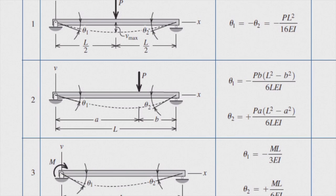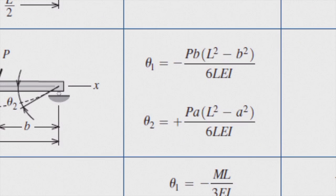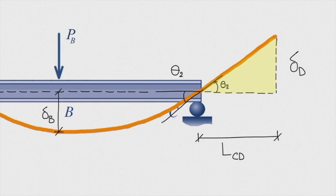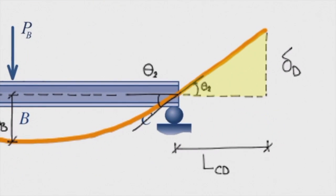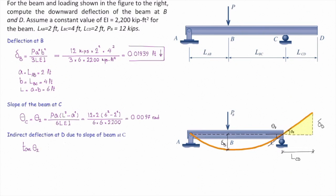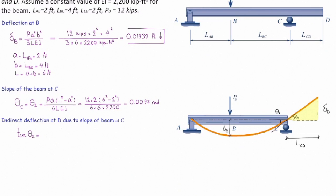From the table, the slope on the right part, theta_2, is given by: θ₂ = Pa(L² − a²) / (6LEI). Now, looking at the triangle carefully, the tangent of theta_2 equals delta_D divided by the length of the cantilever from C to D, which is L_CD. So: tan(θ₂) = δ_D / L_CD. Because the slope is very small, we can approximate tan(θ₂) ≈ θ₂, giving: δ_D = θ₂ × L_CD.